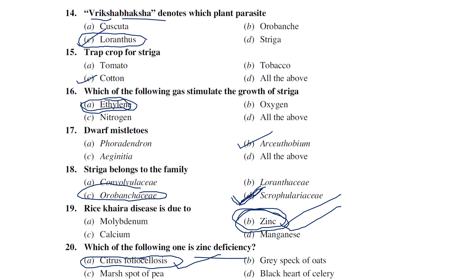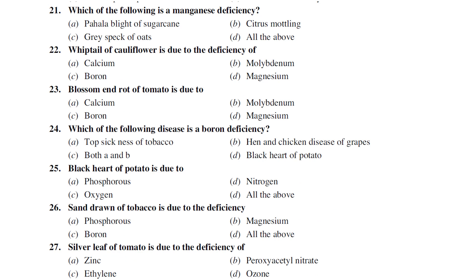This chapter combines phanerogamic plant parasites and physiological disorders. For manganese deficiency: palablator of sugarcane, citrus mottle-leaf, and grey speck of oats are all manganese deficiency diseases — so the answer is all of the above.